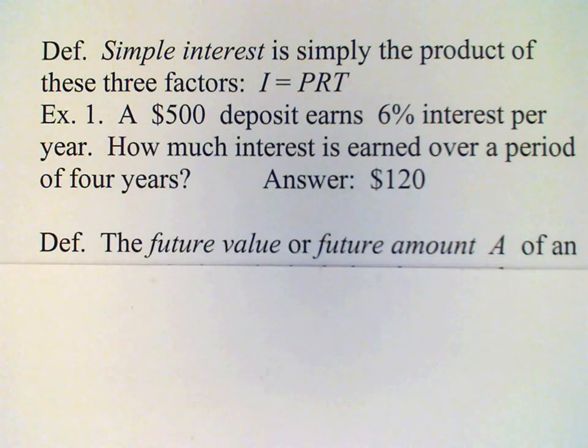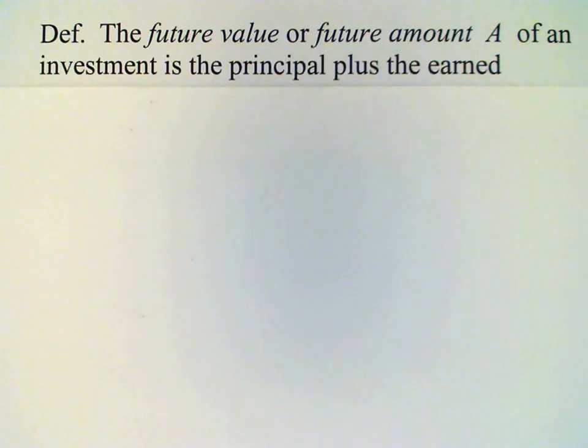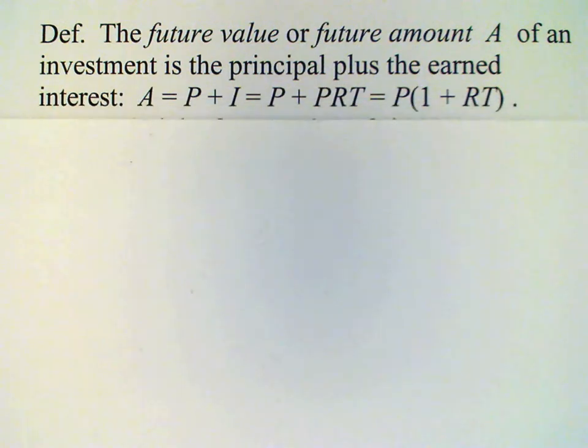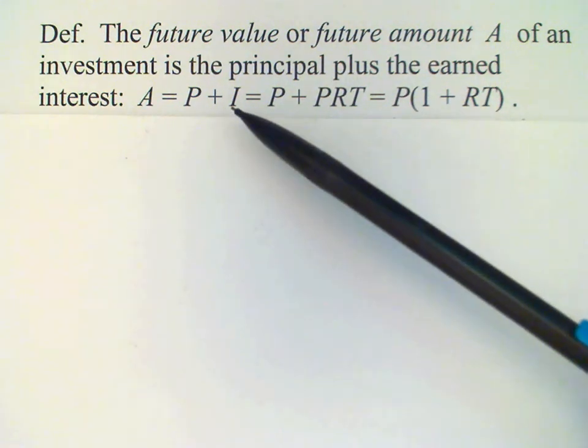Now the next definition: the future value, or the future amount, which is abbreviated with the letter A, is the amount of the interest plus the principal. So we have A equals P plus I, or principal plus interest.